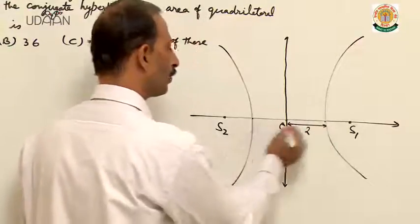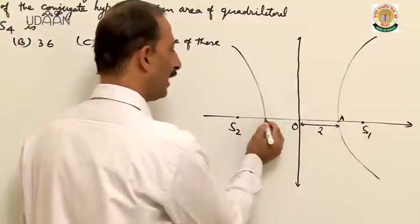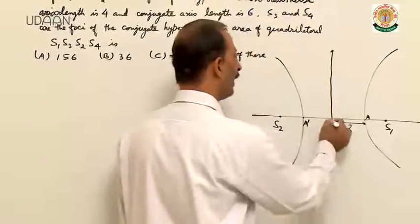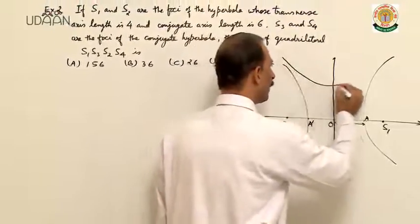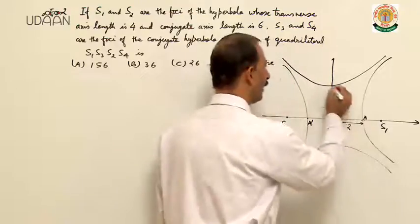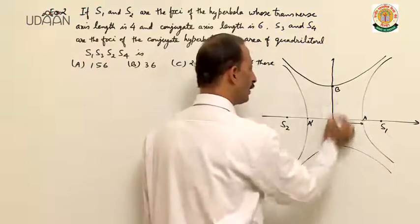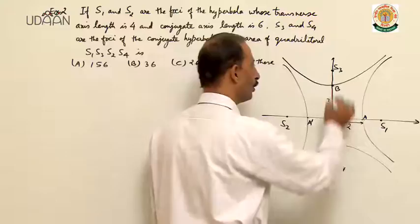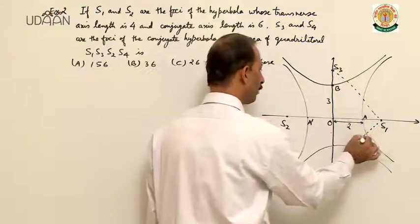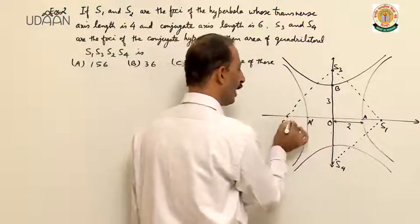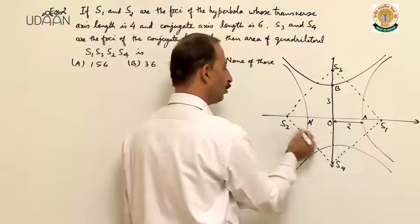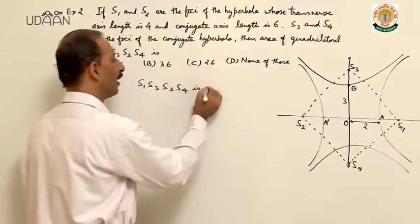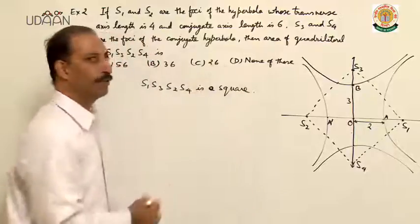Length of transverse axis is 4 units, so OA length is 2. Length of conjugate axis is 6 units, so B to O is 3 and B to B dash is 6. Focus S3 and S4 are on the conjugate hyperbola. You know the property: S1, S3, S2, S4 form a square. So area of this quadrilateral equals 4 times the area of triangle O, S1, S3.